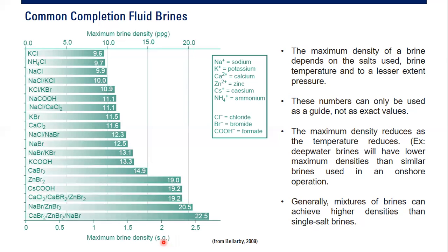You can see these important numbers. The maximum brine density for potassium chloride is 9.6 ppg, for ammonium chloride it is 9.7 ppg, for sodium chloride it is 9.9 ppg, and for the combination of sodium chloride and potassium chloride it is 10 ppg.